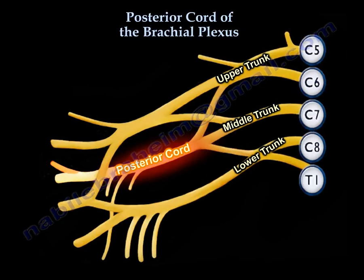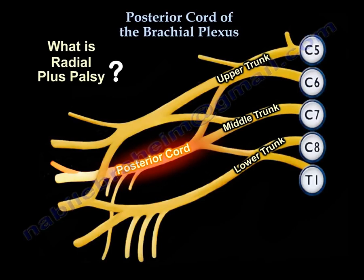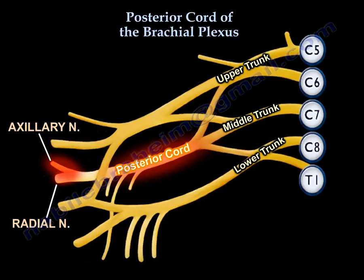Palsy of the posterior cord is called Radial Plus Palsy. This means you will have radial palsy plus axillary nerve palsy, because these are the two terminal branches of the posterior cord — the radial nerve and the axillary nerve. So if you have a palsy of the posterior cord, you will have a combination of these two nerves involved in the palsy.